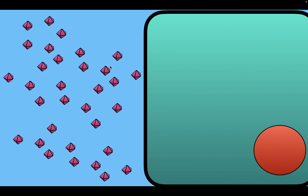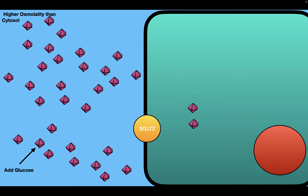Another example of an impermeant solute is glucose. When we add glucose into the solution, the osmolality of the solution becomes greater than the cytosol. Glucose can actually move across the cell membrane through transporters like SGLT2. But when glucose moves into the cell, it is quickly metabolized. So the cell is unable to accumulate glucose inside it, which means glucose can be viewed as a functionally impermeant molecule — even though it can pass through the membrane, the cell cannot accumulate it because it metabolizes it so fast.